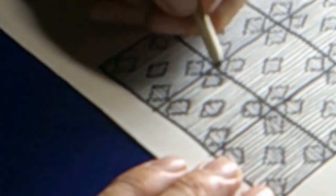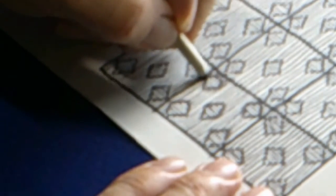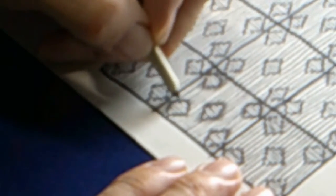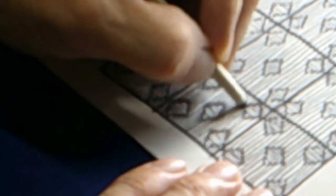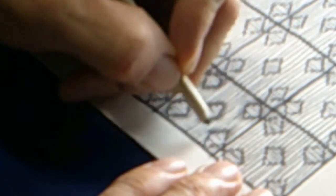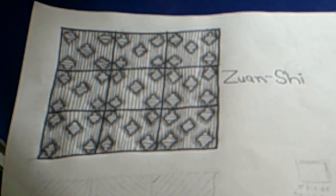And then we'll go in with our paper stump and blend it out a little. Have some more Zentangle fun, and bye for now.